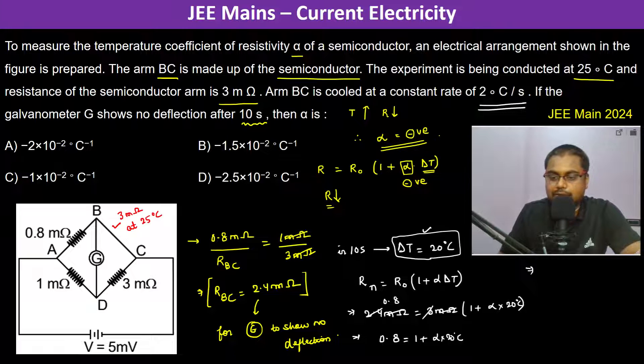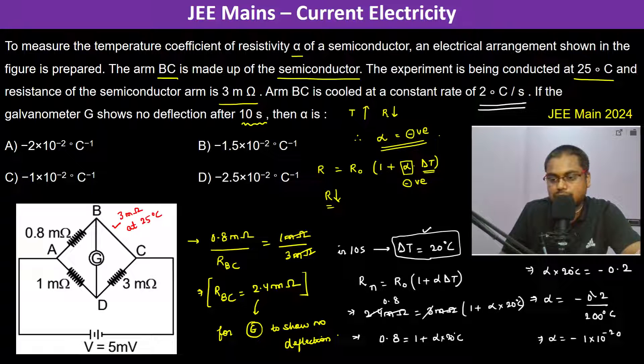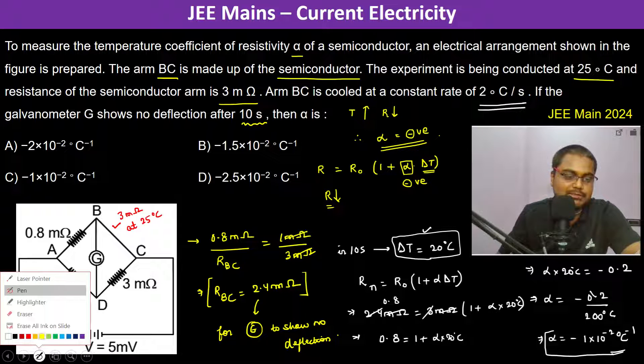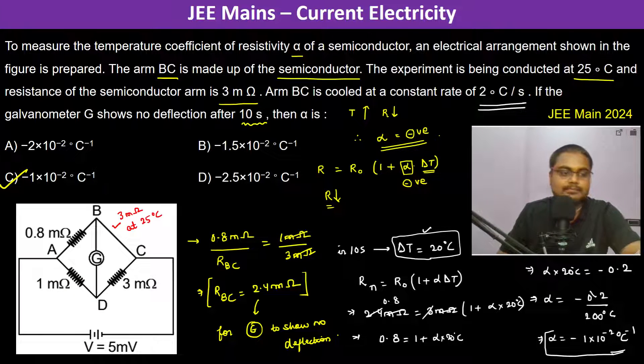Therefore alpha into 20 degree centigrade. So alpha becomes minus 1 times 10 to the power minus 2 degree centigrade to the power minus 1. This is alpha. Therefore, the answer becomes C. Thank you.